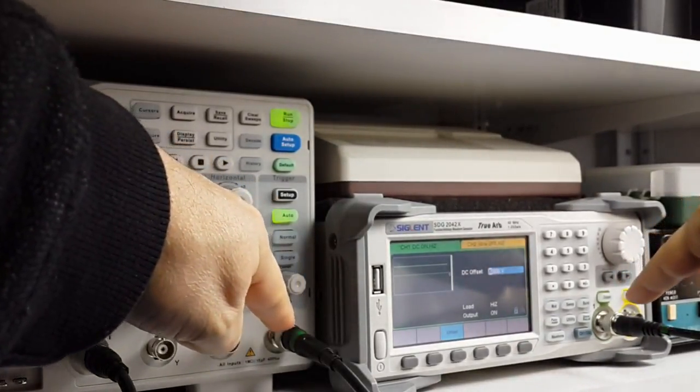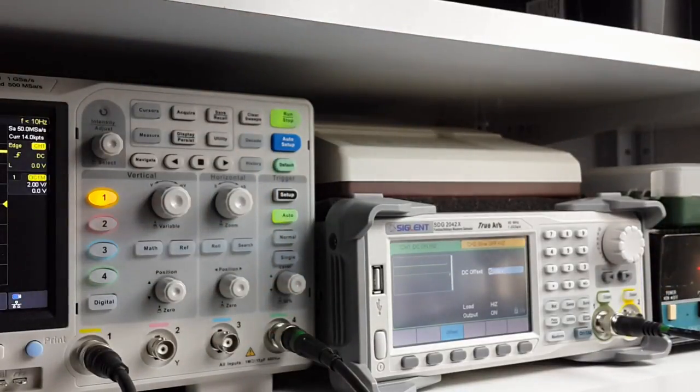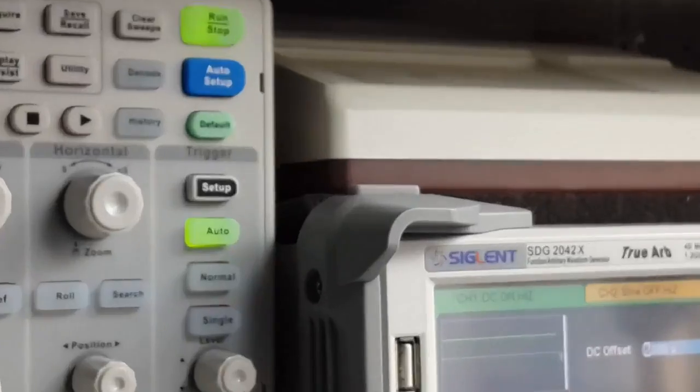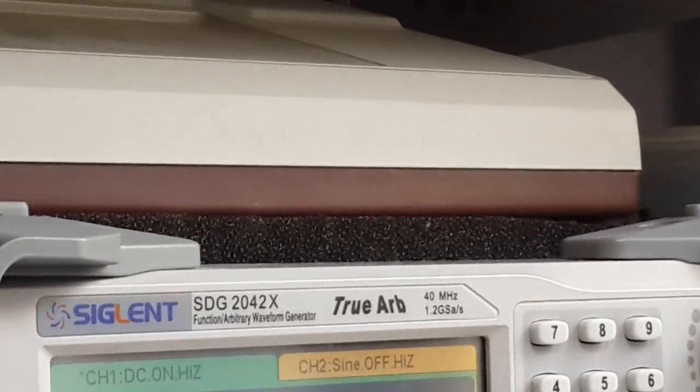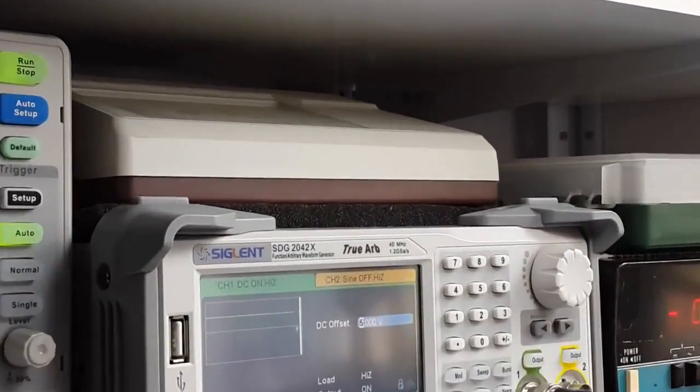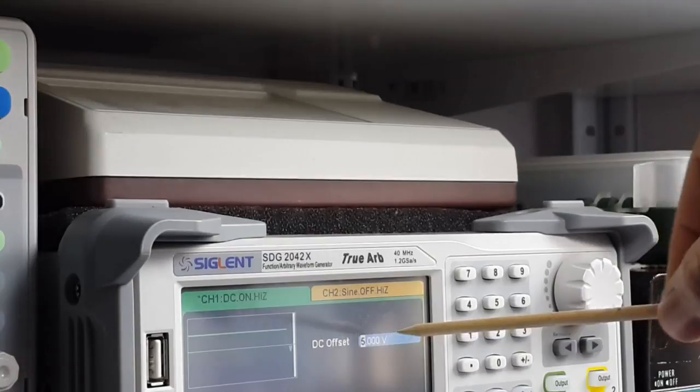In the other side is connected the function generator. I adjust 5 volts DC.